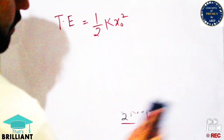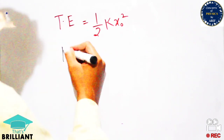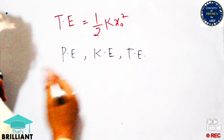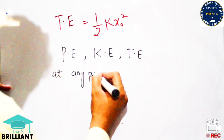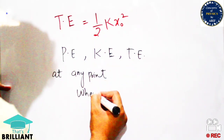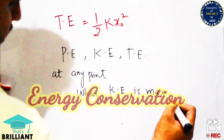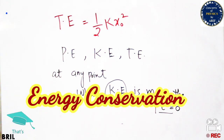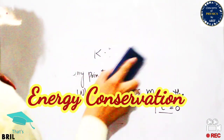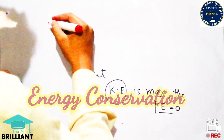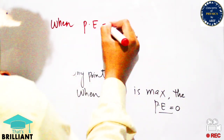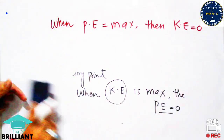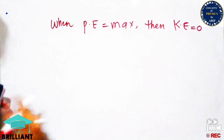We observe that the total energy equals ½kX₀², which is the same as both the potential energy at the extreme point and the kinetic energy at the mean position. This shows that the total energy of the system remains constant at any point — only potential energy and kinetic energy change with respect to each other. When kinetic energy is maximum, potential energy is zero, and when potential energy is maximum, kinetic energy is zero.